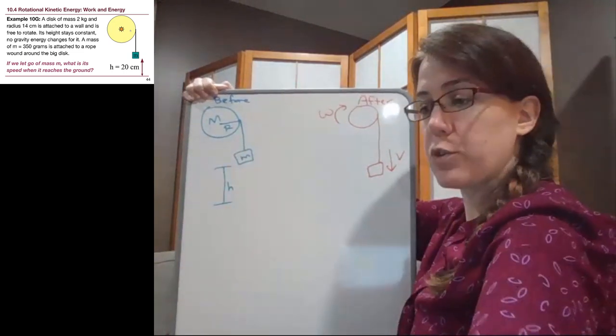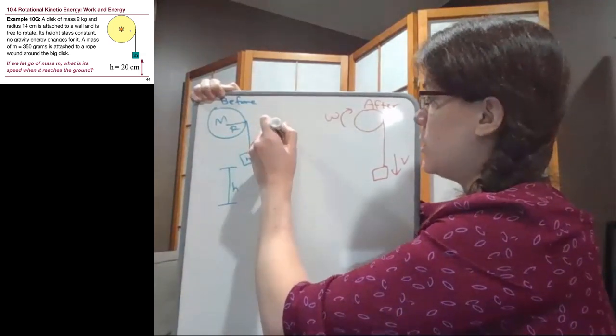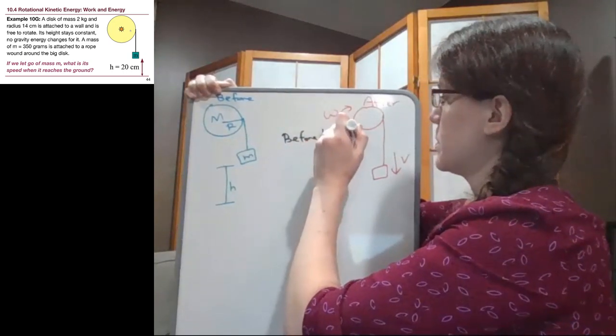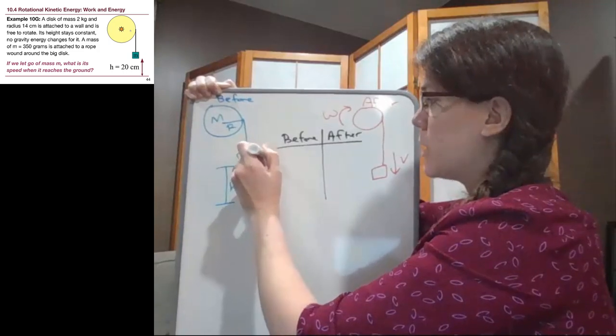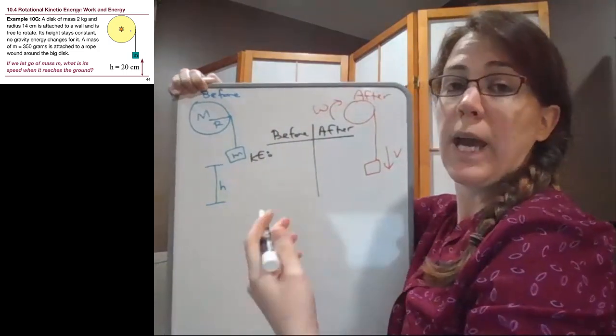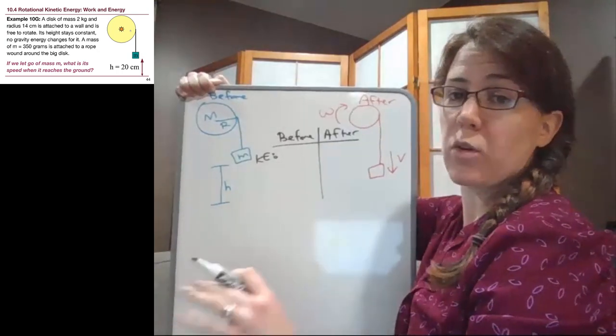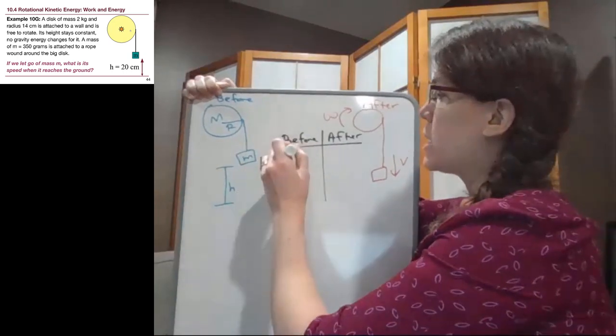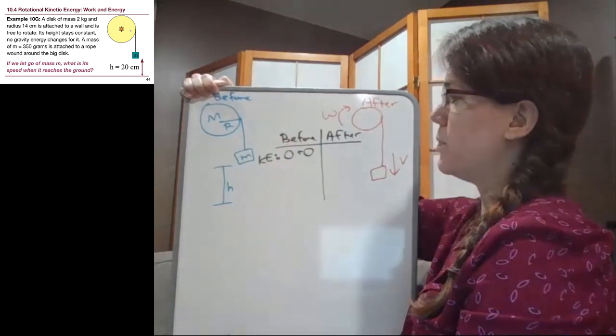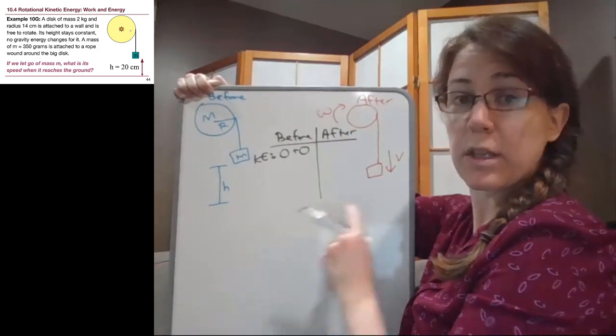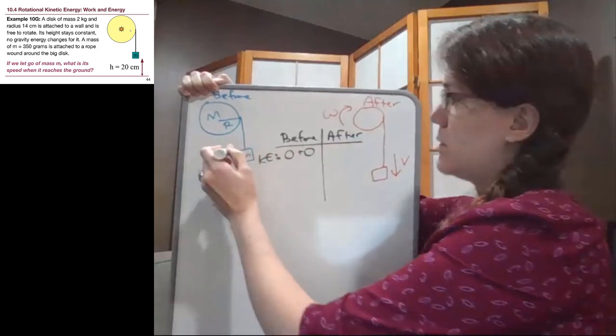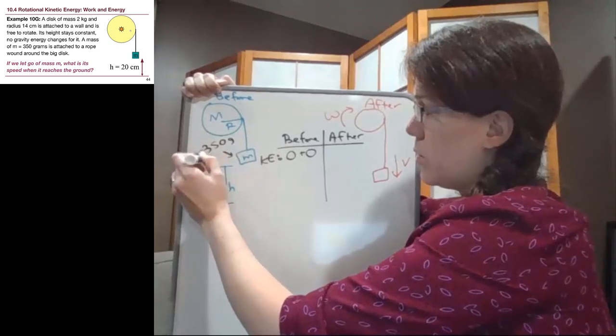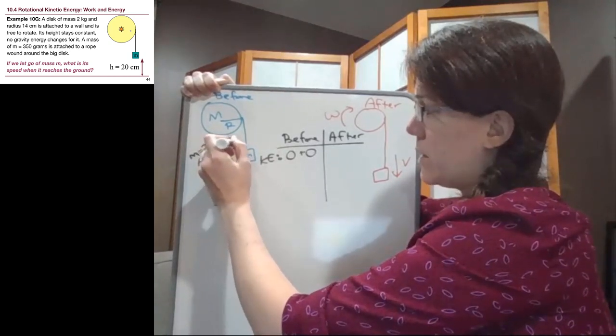So with our before and after situation, we can ask ourselves the questions we normally do. The first question that we ask is, are we moving? At the start of the problem, nothing is moving. We let go in the before picture so that things can start to rotate or move, but at the beginning, nothing is rotating. In the after situation, the little mass has a mass of 350 grams, which means 0.35 kilograms.